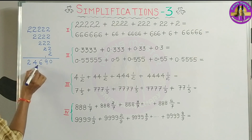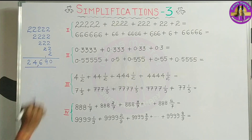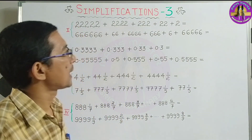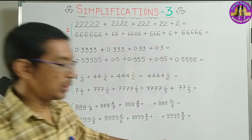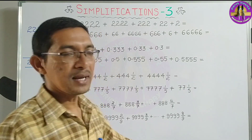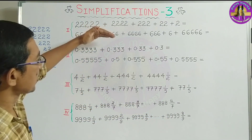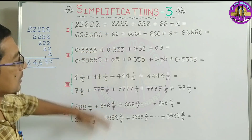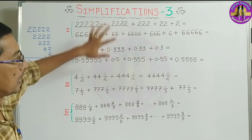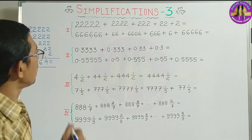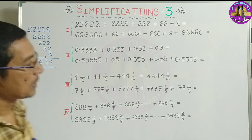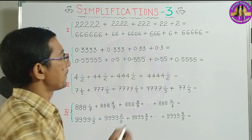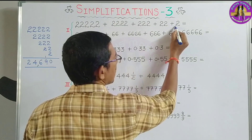The answer is 24,690. We will tell them the number of fractions. Now we are going to do the first thing. We will use the number of digits. We will use the short trick.